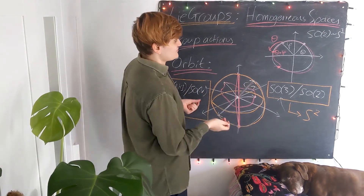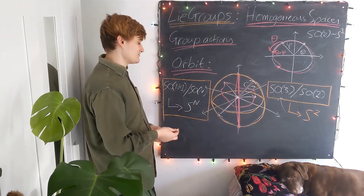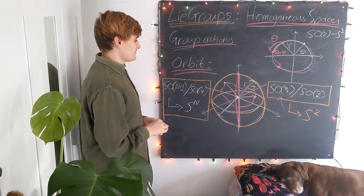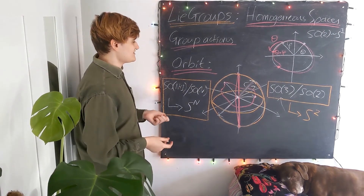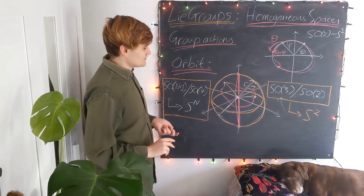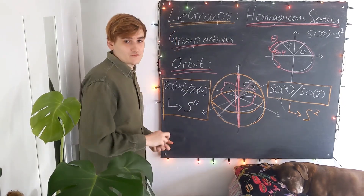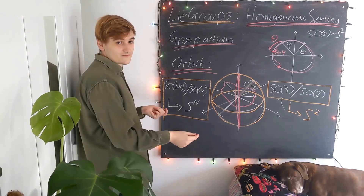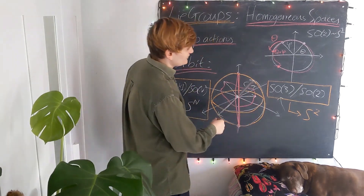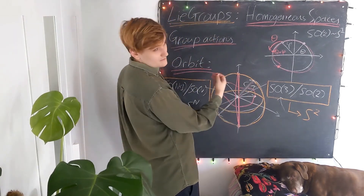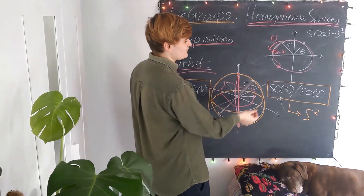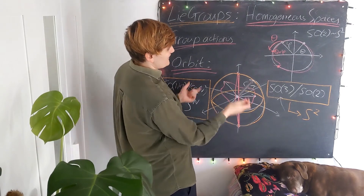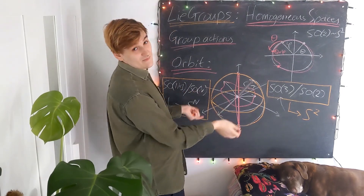That was a bit of a hand-wavy video — I didn't go too deep into the details and I probably confused you at the beginning when I started talking about orbits. Don't worry too much about that; just focus on the idea that we want to take some subset of the group which is equivalent under a lower-dimensional group, and that's going to form a symmetric space.